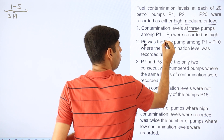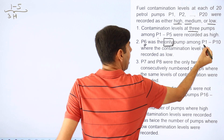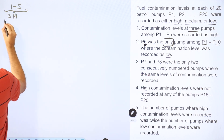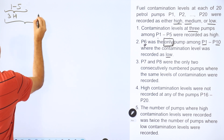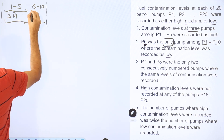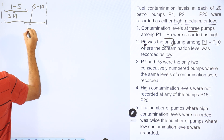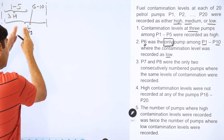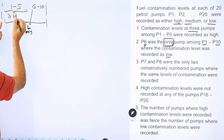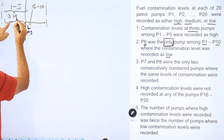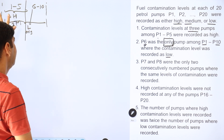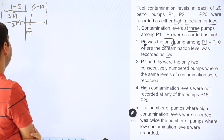P6 was the only — the word 'only' is very important — pump among 1 to 10 where the contamination level was low. So I extend the range from 1 to 10. Six is the only low. Repeat in your mind: the others are either medium or high (M or H). So in pumps 1 to 5, it's not just three high — the other two are medium, because low cannot appear there. Pumps 7 to 10 will be medium or high.